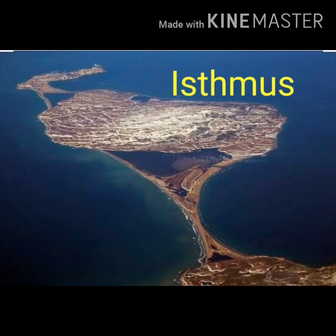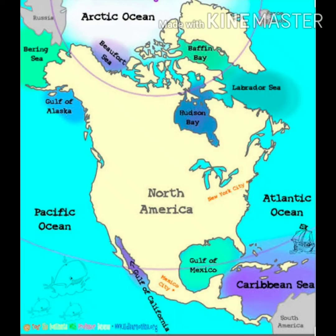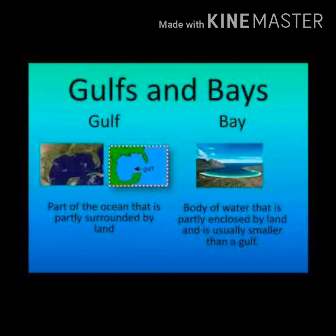The Isthmus of Panama joins North America with South America and separates the Pacific Ocean in the west and the Atlantic Ocean in the east. North America has a smooth coastline with many wide openings along its coast. Wide openings are a type of gulfs and bays — it has many gulfs and bays.